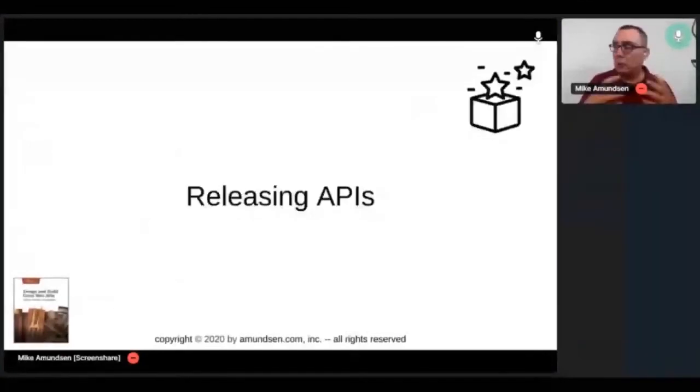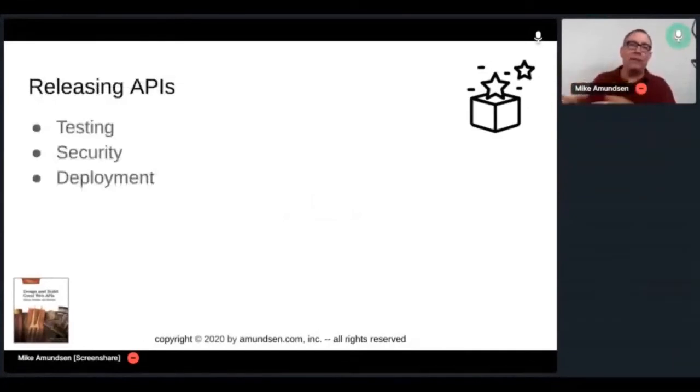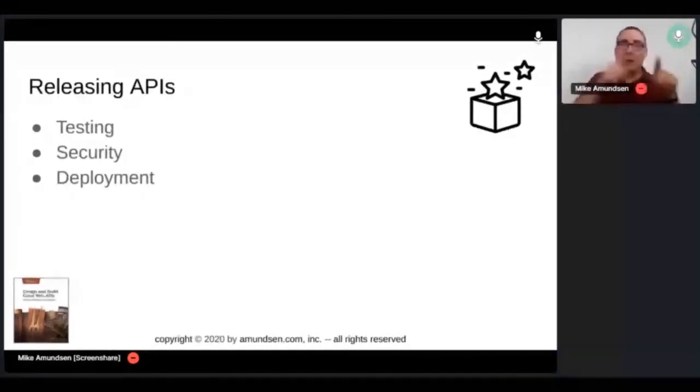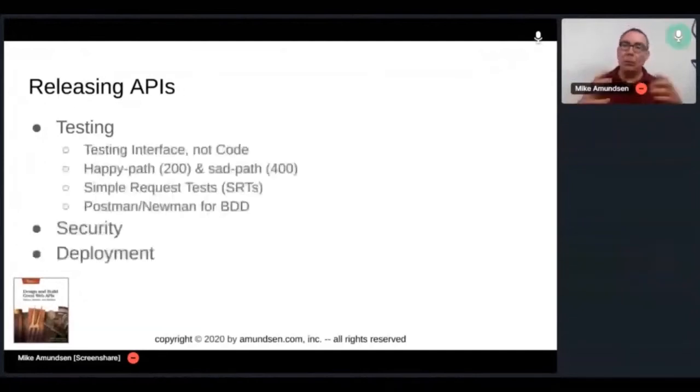So let's talk about releasing APIs here. So I put in my book, releasing is testing, security, and deployment. Now, in reality, remember, no straight lines. You'll be actually doing this over and over and over again. You'll be testing every time you save. You'll be working on security all the time. You'll be deploying over and over, maybe every day if you're lucky. But here, we're going to talk about them separately. So when I talk about testing, remember, we're testing the interface, not the code. We're testing the behavior, the inside out. That's why I like BDD so much. Because BDD is from the outside in.